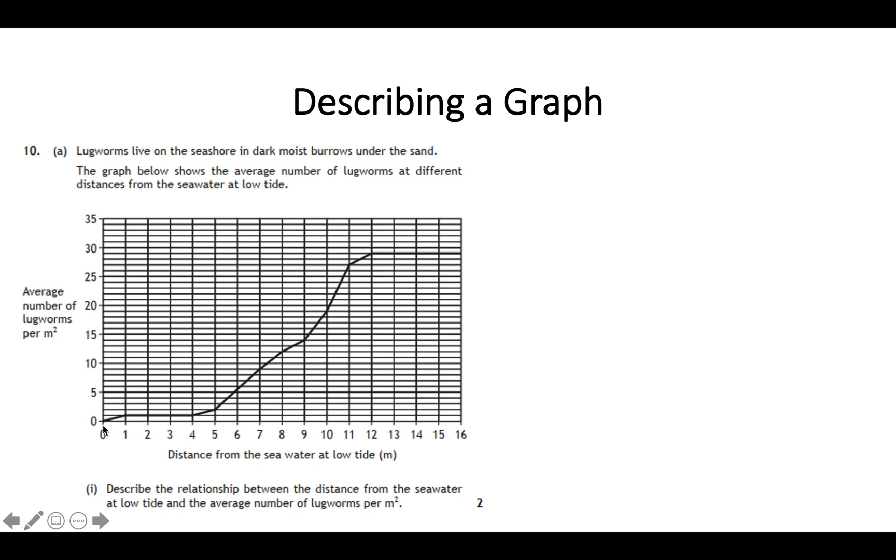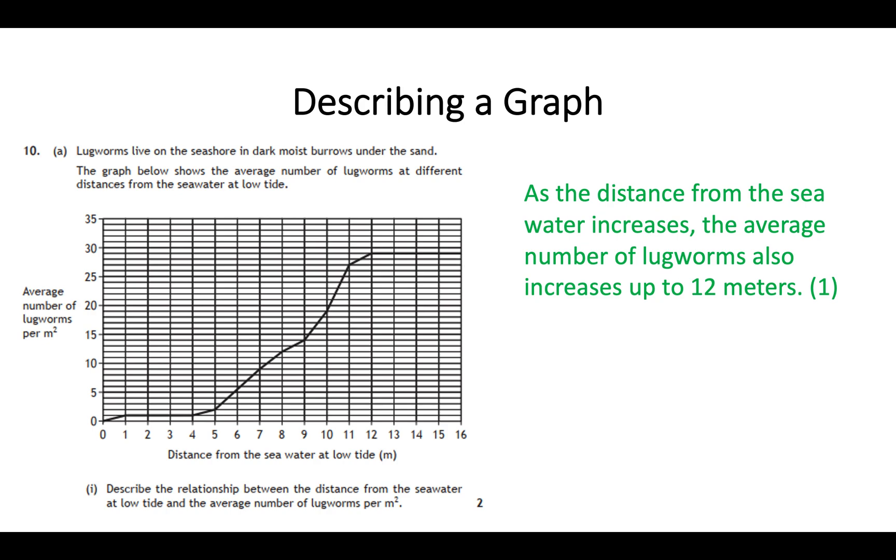At zero meters, at the low tide mark, we can see there are zero lugworms on average. As we increase our distance from the seawater at low tide, the average number of lugworms starts to increase. It goes from zero up to one, then to two, eventually we get to about five, ten—it starts rising quite rapidly. So we can say that as the distance from the seawater at low tide increases, the average number of lugworms per meter squared also increases. However, when we get to the 12-meter mark from low tide, the numbers do not increase anymore. It remains constant, there's no change. So that must be the second mark. Your first mark should be that as the distance increases, the average number of lugworms also increases up to the 12-meter mark. For your second point, after 12 meters the number of lugworms remains constant, doesn't change, or levels off.